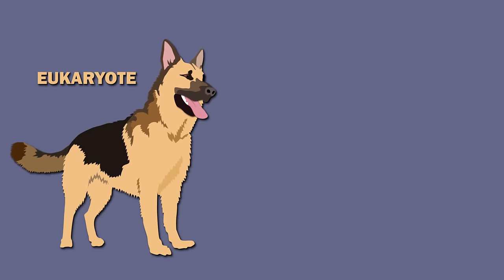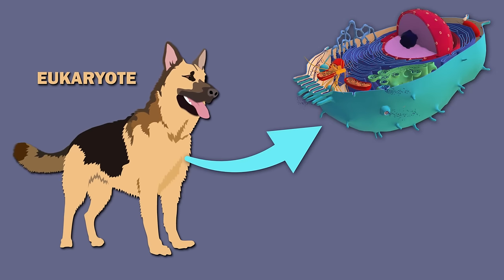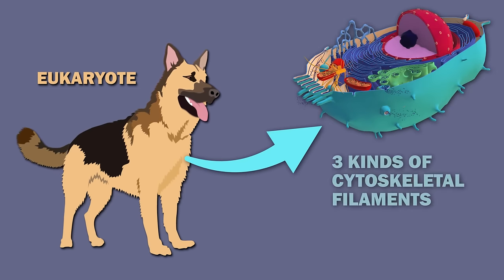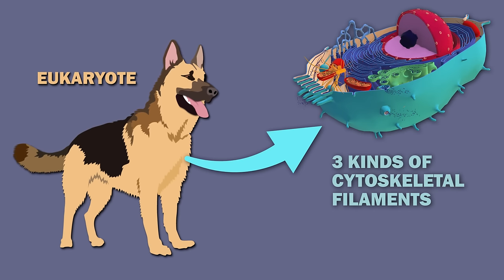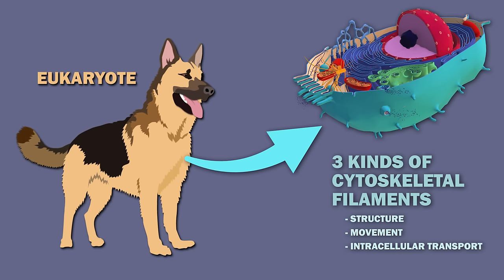The cytoskeleton of a eukaryote, specifically of an animal cell, has three kinds of cytoskeletal filaments, which provide structure, aid in movement, and help with transport within the cell.